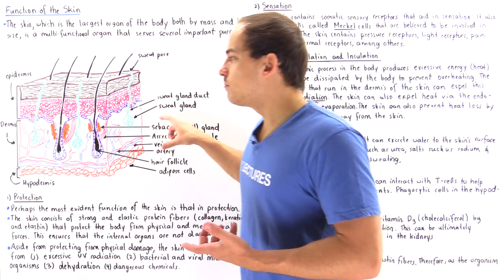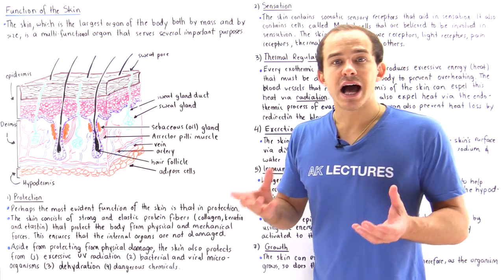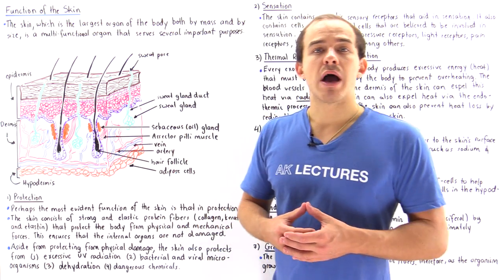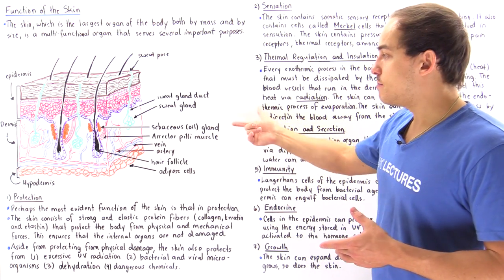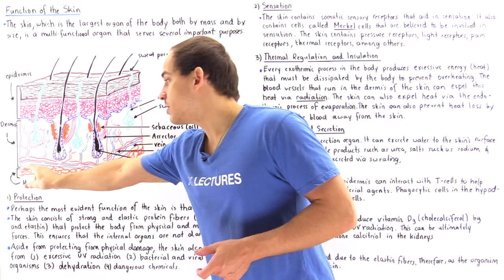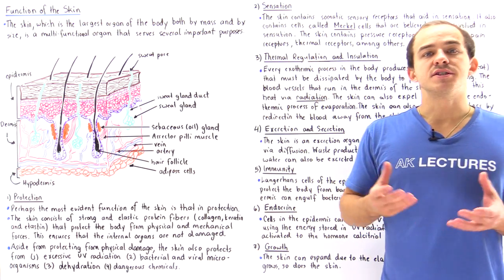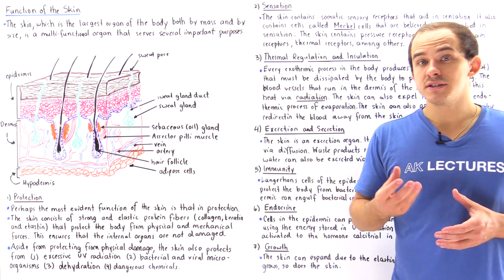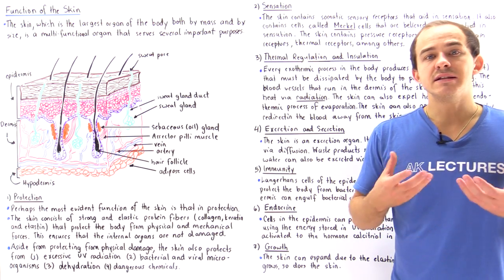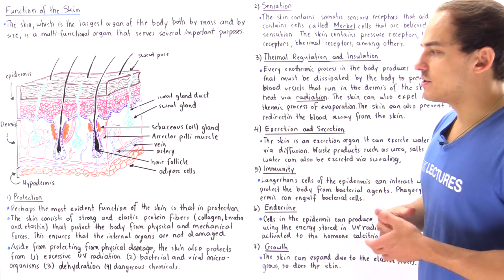The middle section of the skin is the dermis, which contains blood vessels — arteries and veins — as well as excretory glands such as the sebaceous oil gland and the sweat gland. Finally, the lowermost portion is the hypodermis, also known as the subcutaneous layer, which contains adipose cells that insulate the body as well as macrophage cells that engulf bacterial cells.